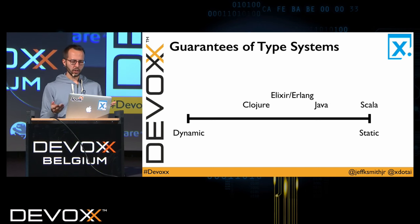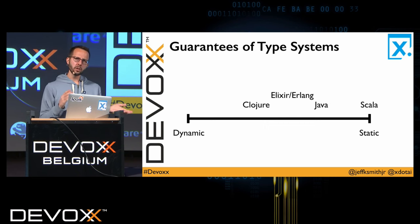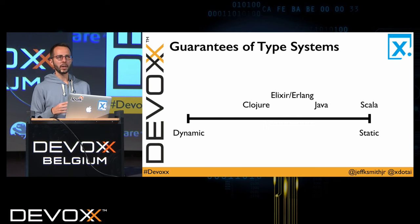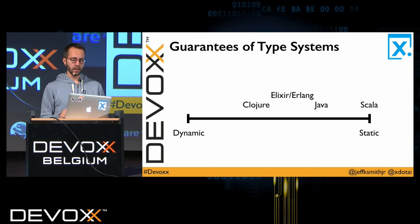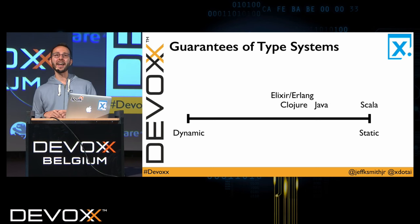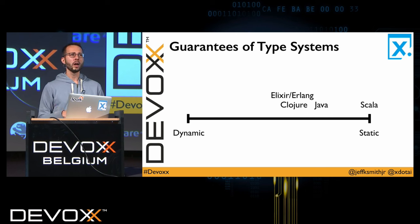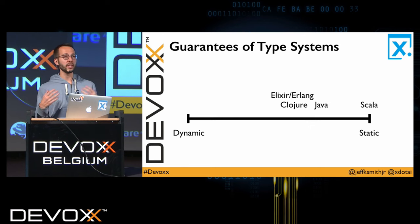Using tools like core.typed or Prismatic Schema in Clojure, we have the ability — much like in the Elixir example — to optionally encode what are the type expectations of our application within our Clojure program. This is really powerful because it gives us the choice around which are the important areas of our application where we need this sort of guarantee and which ones are not.